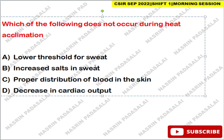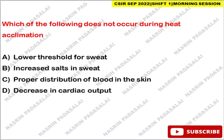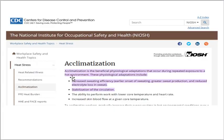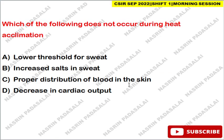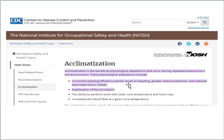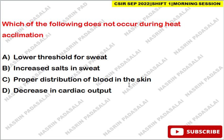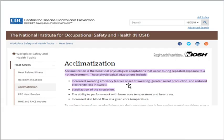The question asks which of the following does not occur during heat acclimatization. The correct answer is increased salt in sweat. According to a CDC/NIOSH publication, acclimatization is a beneficial physiological adaptation occurring with repeated exposure to a hot environment. It includes increased sweating efficiency, greater sweat rate, and reduced electrolyte loss in sweat. Other effects include stable circulation, lower body temperature, lower heart rate, decreased cardiac output, and increased skin blood flow at a given core temperature.